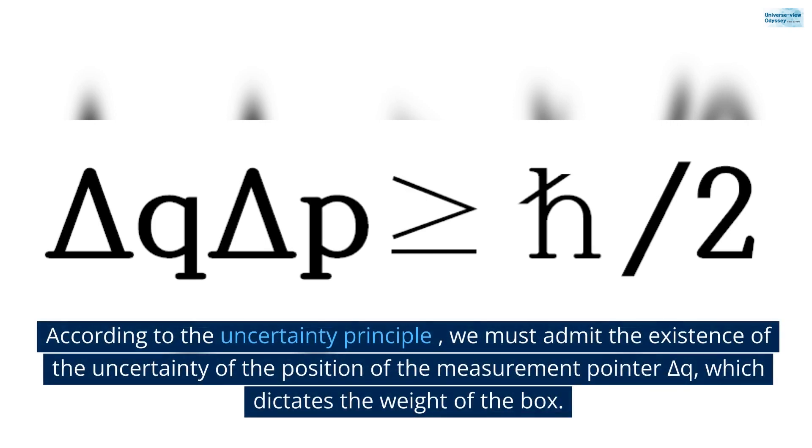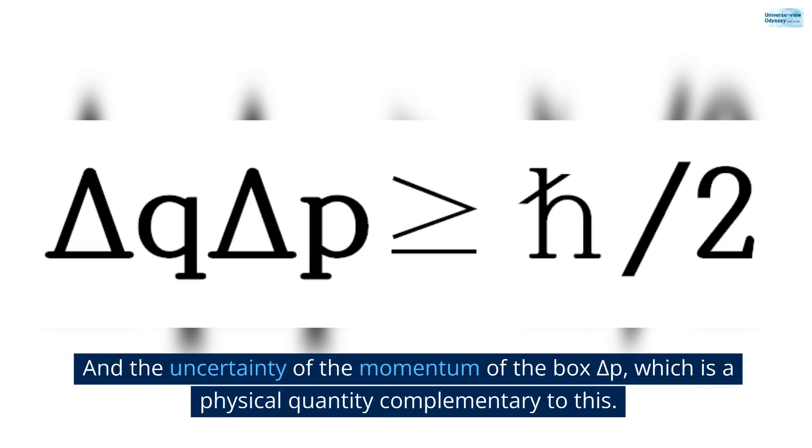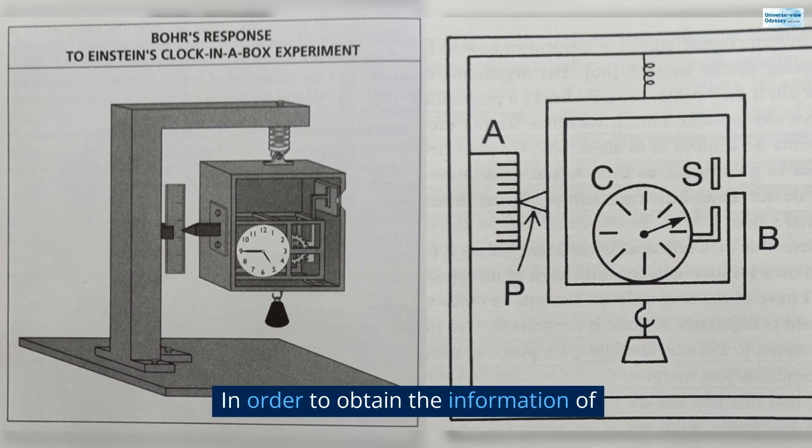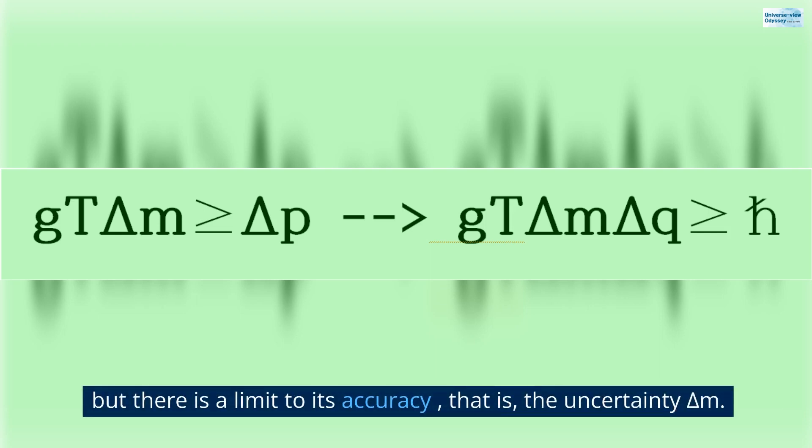According to the uncertainty principle, we must admit the existence of the uncertainty of the position of the measurement point delta Q, which dictates the weight of the box, and the uncertainty of the momentum of the box delta P, which is a physical quantity complementary to this. In order to obtain the information of delta P, the mass of the box must be measured. But there is a limit to its accuracy, that is, the uncertainty delta M.